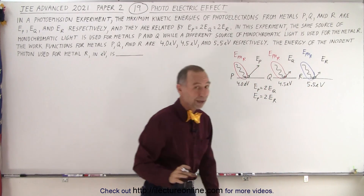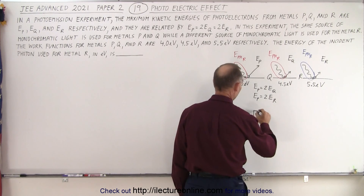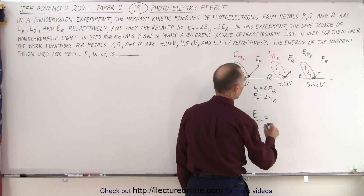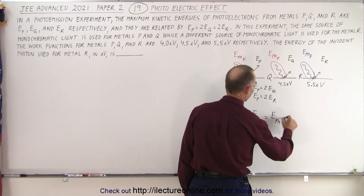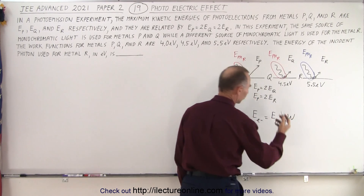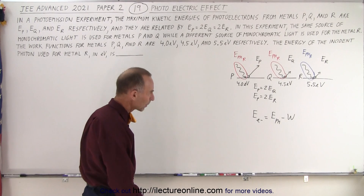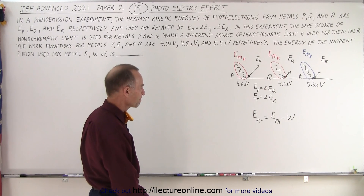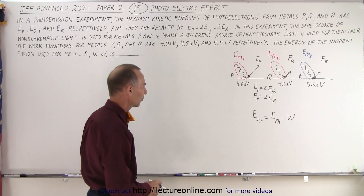We need the equation: the energy of the outgoing electron equals the energy of the incoming photon minus the work function — I'll use w for work function. Let's set that up for all three situations.